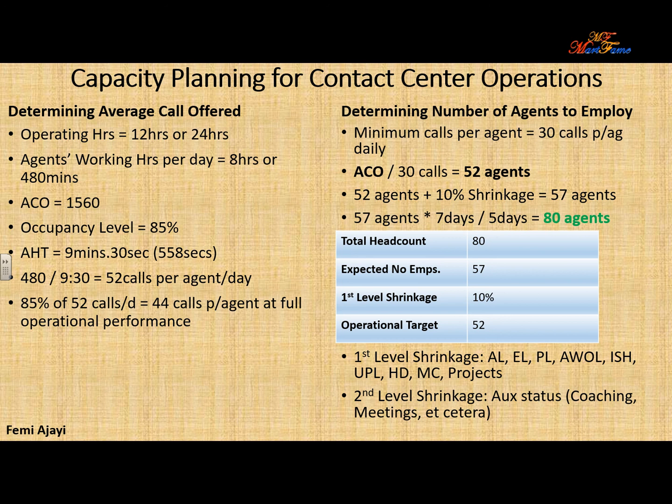We know that within a day there are often some variations and exceptions — things that happen, some factors that make it impossible for an agent to take the maximum number of calls. For example, you might have to do some coaching, some training, running some extra campaigns. So you need to bring these into your equation and set a minimum number of calls you want each agent to be taking. In this example, let's say we're using 70%.